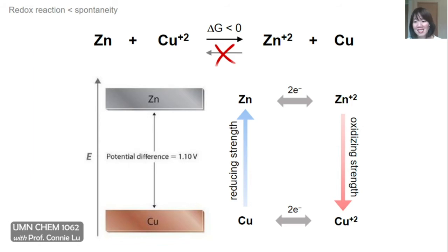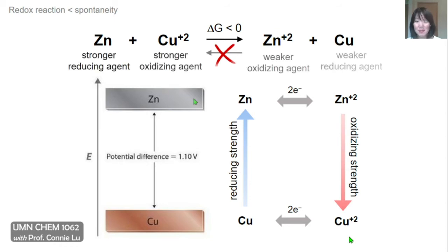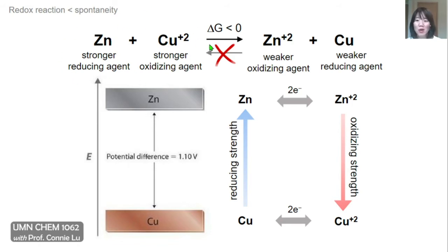One way to reason this is that zinc plus two as an oxidizing agent has to gain electrons to reform zinc. If zinc would rather give up electrons, then it's going to be much harder for zinc plus two to gain electrons to reform the metal. This complementary relationship between the reducing strength of metals and the oxidizing strength of their metal ions is very similar to what we saw in acid-base chemistry, where the stronger the acid, the weaker its conjugate base, and vice versa. We can think about the top redox reaction as really a reaction between a reducing agent and an oxidizing agent to form an oxidizing agent and a reducing agent. Just like in acid-base chemistry, the direction of spontaneity is such that the stronger pair will form the weaker pair.